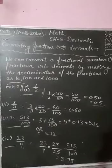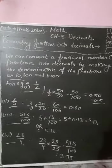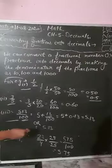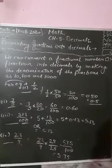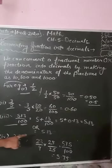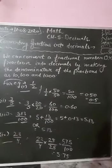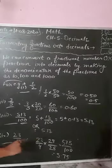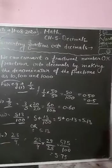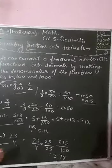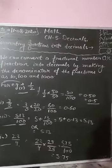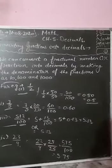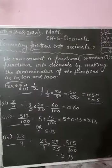The next example is 23 over 4. I have to make the denominator 10, 100, or 1000, so I made it 100 by multiplying 25 upon 25: 25 times 4 is 100, giving 575 by 100. Two zeros are there, so I leave two digits from the right and the answer is 5.75. In this way, you can convert fractions into decimals.